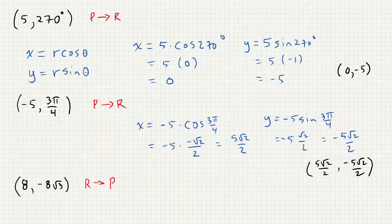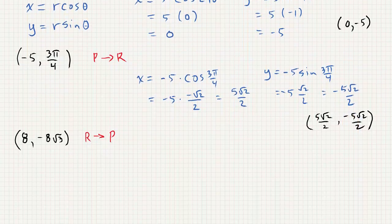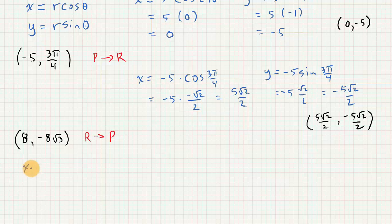Now, the harder direction is starting with rectangular and going over to polar. So let's take a look at that. So here we have that x is equal to 8, and we have that y is equal to negative 8 root 3.